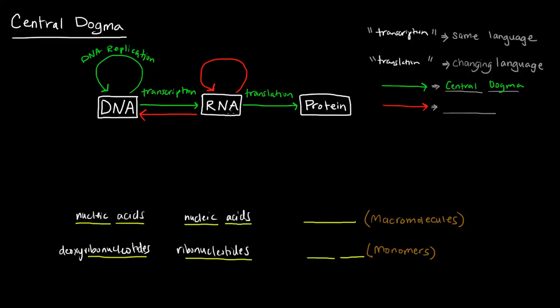So going from RNA to protein, you're changing the macromolecule. You're going from a nucleic acid that's coding for a protein. So the macromolecule is a protein, and proteins are made up of amino acids. So in that case, you're changing the language. That's how I remember transcription versus translation.